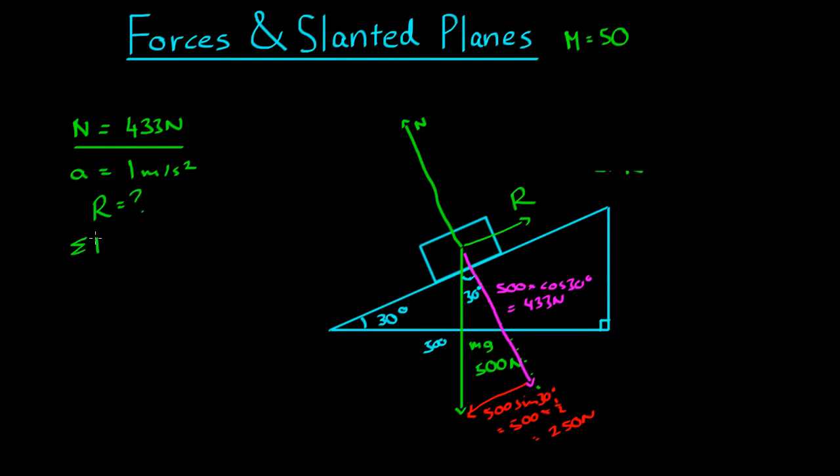Well, the net force always equals ma. In this case, that equals 50 times 1. So the net force equals 50 newtons in this direction. The net force in this direction is going to be 0. So 50 newtons would have to equal the force here that's pulling the block down the plane, which is 250 newtons, take away the force that's resisting it, R.